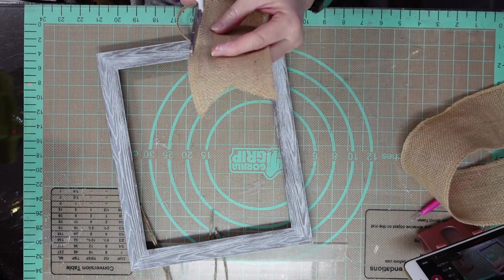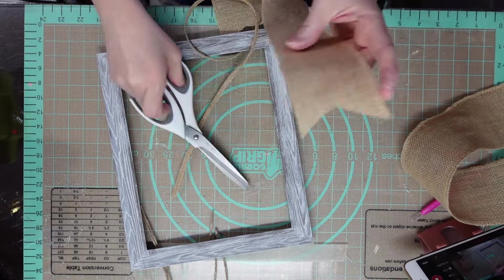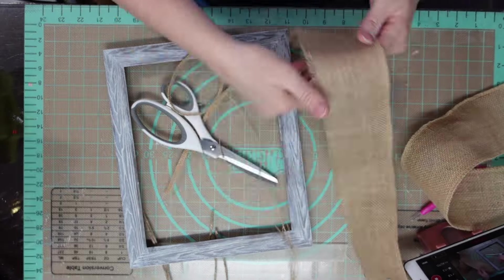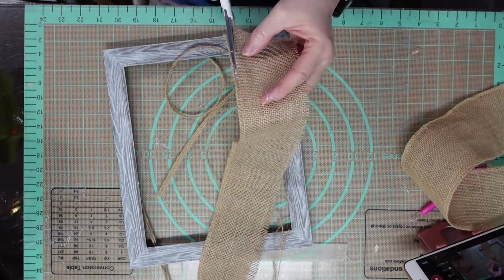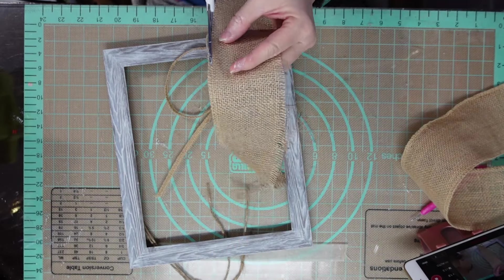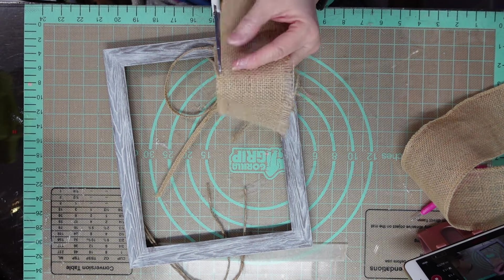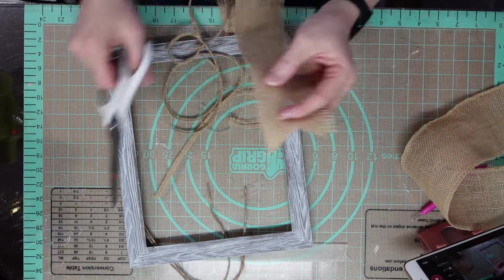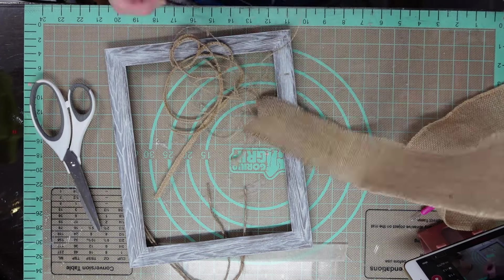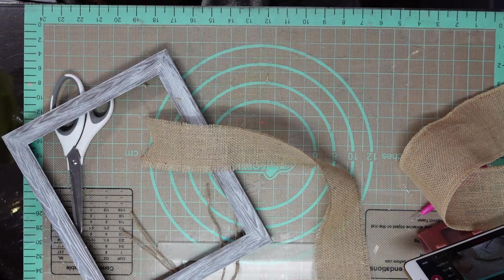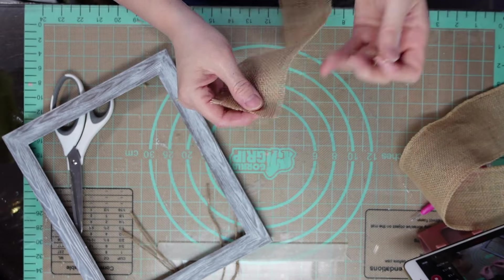This is burlap ribbon that I got at Dollar Tree and I had it in another project. I'm ripping the sides off because I want to fray it like that right there. So I'm going to cut the sides off both these pieces. I'm not going to need them the same length. One has to be shorter because I'm making a cross here.